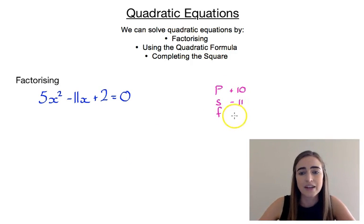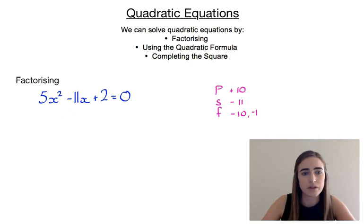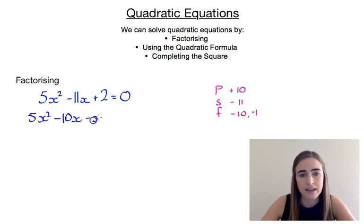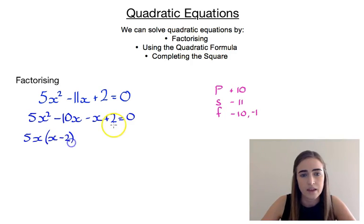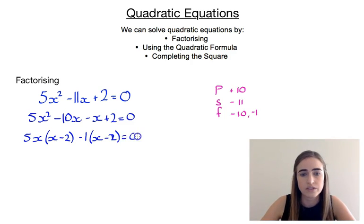And we want a sum of minus 11. So to get those two things, our factors would have to be minus 10 and minus 1. So if we factorise those, we're going to have 5x squared minus 10x minus x plus 2 is equal to 0. We'll pull out our common factor of these first two terms, which would be 5x, giving 5x outside of x minus 2. And in these second two terms, we'll pull out negative 1, so minus 1 outside of x minus 2 is equal to 0.